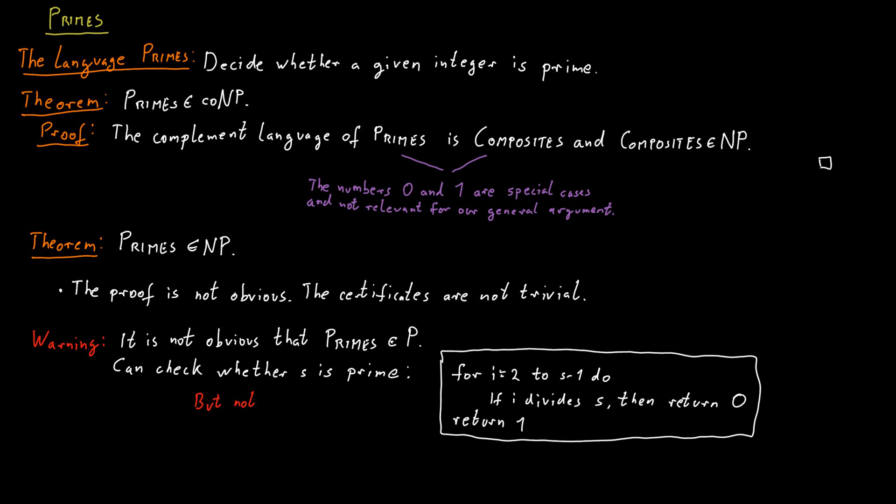Indeed, this works. The problem with it is that it's not efficient. It does not run in polynomial time. How many steps does your algorithm have? Suppose you can check the division of a number by another number in constant time. But how many such checks do we make?